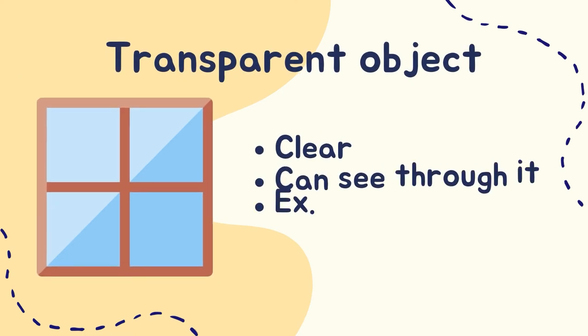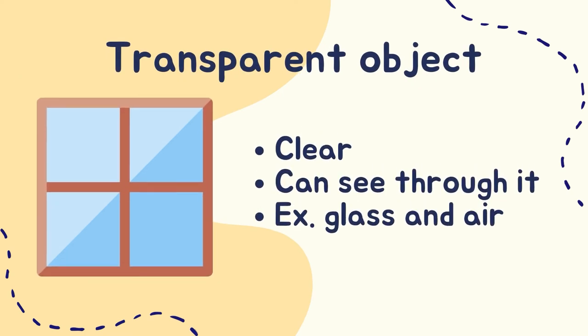Transparent objects are clear. We can see through transparent objects. Light can pass through these objects. Examples of transparent objects are glass and air.